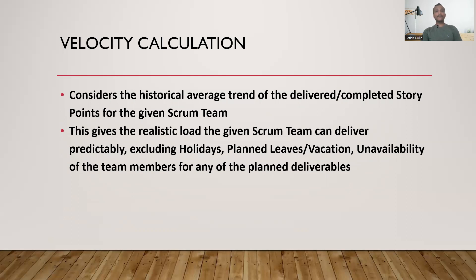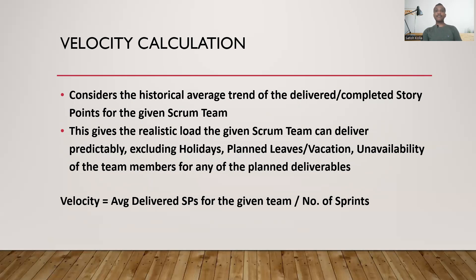This helps the team to plan a realistic load and provides predictability for the business team — including product owners, product management, or leadership — to figure out how much the team can handle, focus on, and commit in upcoming sprints or from the SAFe perspective, in the upcoming Program Increment. The velocity formula is: average delivered story points of the given team divided by the number of sprints. We need to consider the latest sprints' historical data, not the initial sprints.